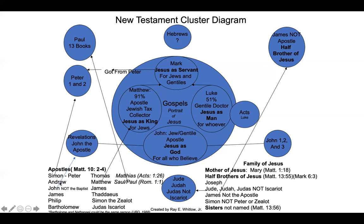Then we have Peter's brother Andrew. And then we have John — this is not John the Baptist, who did not write a book in the New Testament. This is the apostle John, and he wrote the book of Revelation. He also wrote the Gospel of John, and he wrote First, Second, and Third John. His brother is James.